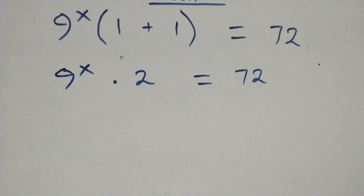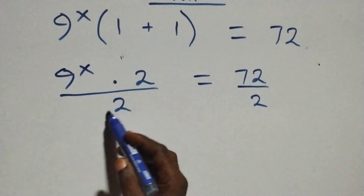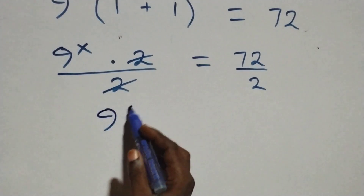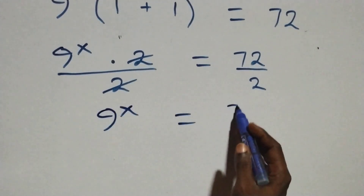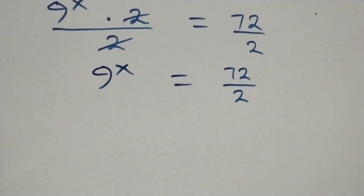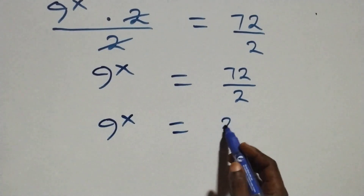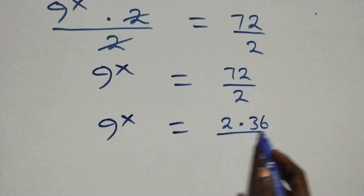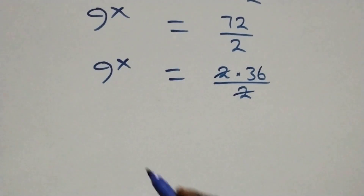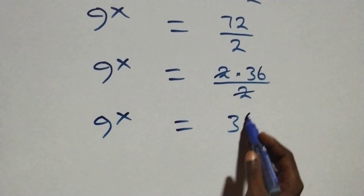The next step is the same thing as 9 raised to power x times 2 equals 72. From here we divide both sides by 2 — the two cancels — and we have 9 raised to power x equals 72 over 2. This can be written as 9 raised to power x equals 2 times 36 over 2, and after cancellation we have 9 raised to power x equals 36.